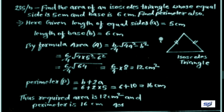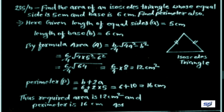Similarly, the perimeter of the isosceles triangle: P = b + 2a = 6 + 2 × 5 = 6 + 10 = 16 cm. So the required area is 12 cm² and the perimeter is 16 cm.